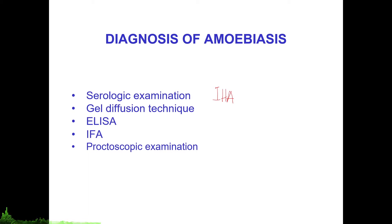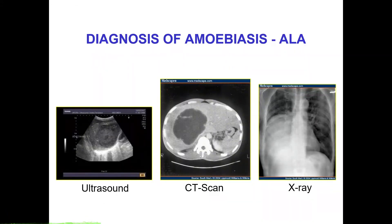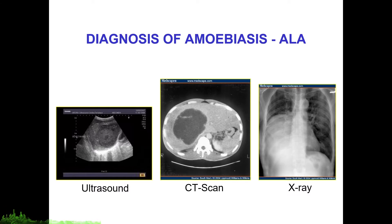Serologic examination is usually good for extra-intestinal amoebiasis. Radiologic techniques can also be used to diagnose amoebiasis, particularly amoebic liver abscesses or even pleuro-pulmonary amoebiasis. Ultrasound, CT scan, or even x-ray can show signs of the presence of amoebic liver abscesses.